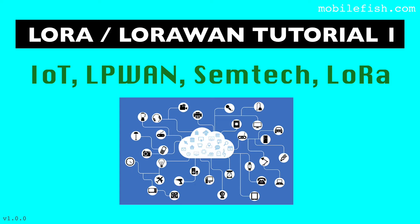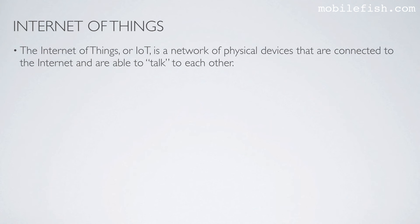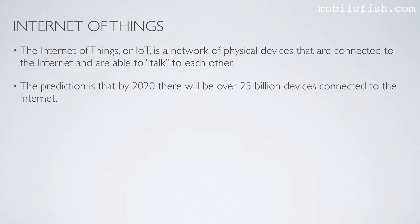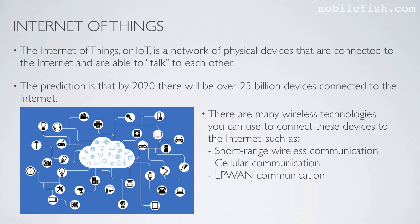In this first tutorial I will explain why LoRa is used in IoT projects. The Internet of Things, or IoT, is a network of physical devices that are connected to the internet and are able to talk to each other. The prediction is that by 2020 there will be over 25 billion devices connected to the internet. There are many wireless technologies you can use to connect these devices, such as short-range wireless communication, cellular communication, or LPWAN communication.